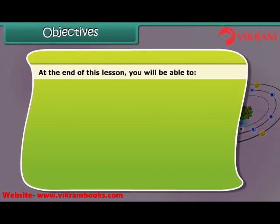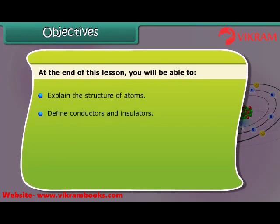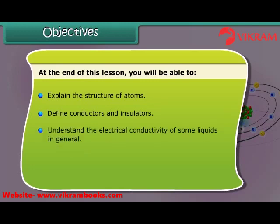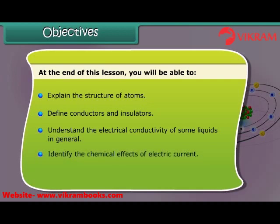At the end of this lesson you'll be able to: explain the structure of atoms, define conductors and insulators, understand the electrical conductivity of some liquids, identify the chemical effects of electric current, and list the uses of chemical effects such as electroplating.